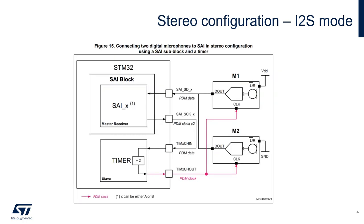We can also exploit the SAI in I2S mode to acquire two digital microphones. The two main aspects of this configuration are: the microphones are configured with opposite left-right pins and share a common data line. The SAI peripheral operates at twice the microphone frequency in order to read the data provided by both microphones which share the same data line.